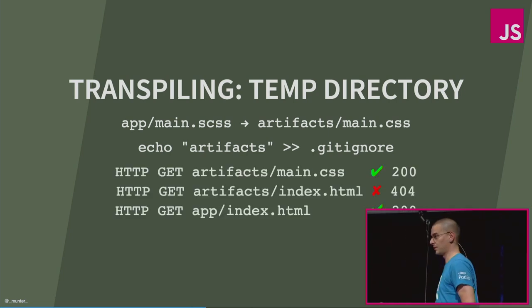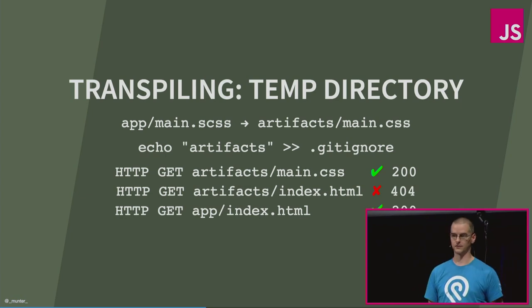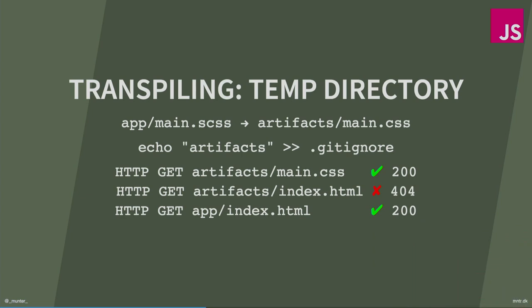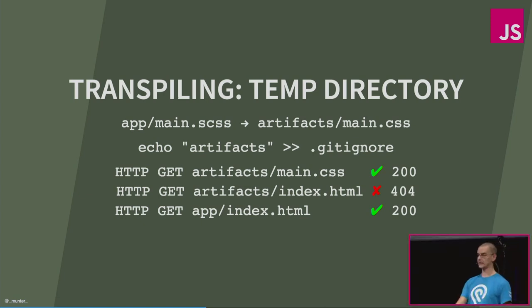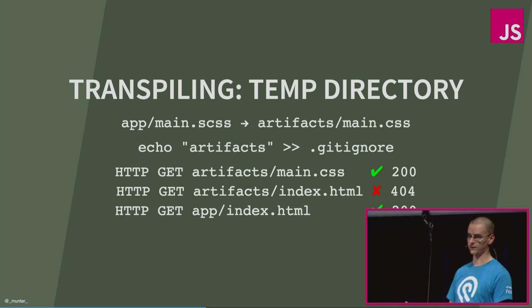In order to deal with this, people have come up with a setup where you add a piece of middleware to your web server. This middleware knows about the existence of the build artifacts in a different directory. On the first HTTP GET, the web server looks for main.css in the artifacts directory, then index.html in the artifacts directory. But it doesn't find it because index.html might not actually be a transpiled build artifact. So when it gets a 404, it falls back to your original source directory. Now we have middleware that needs to know something about your workflow setup.